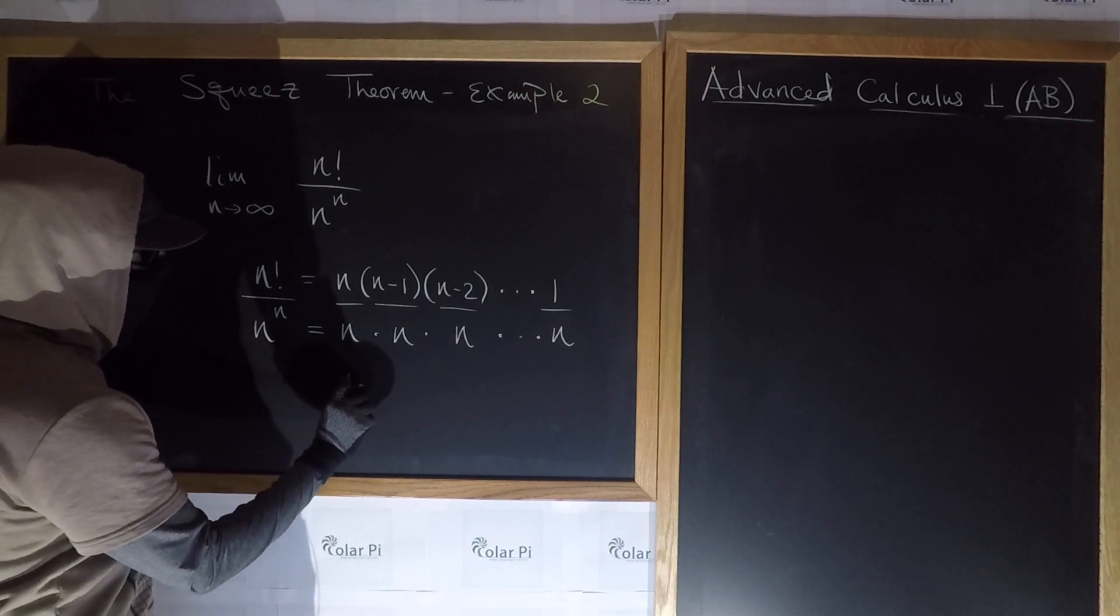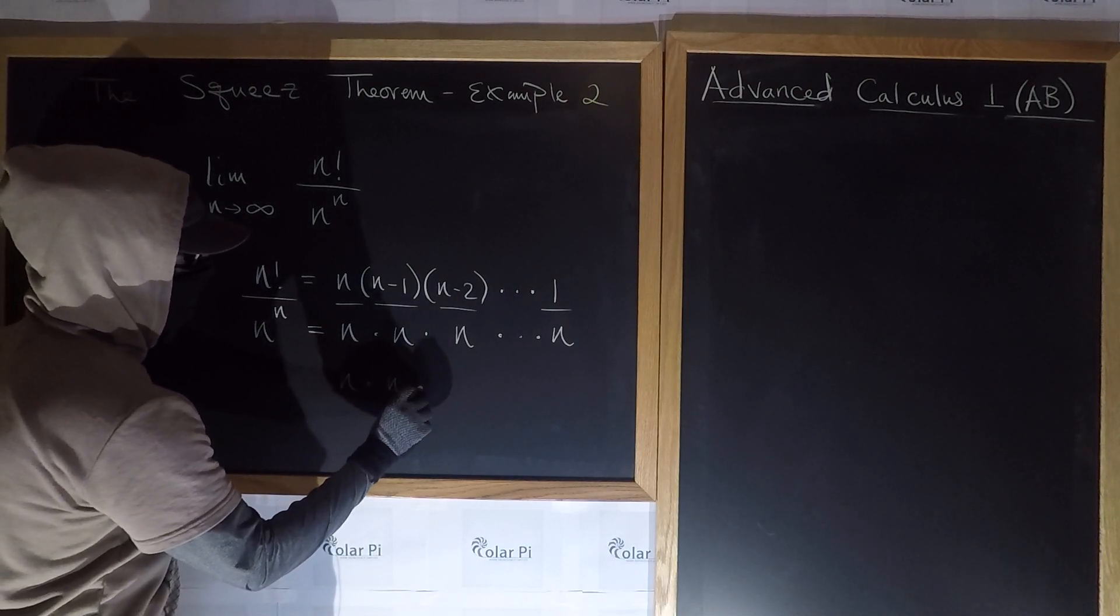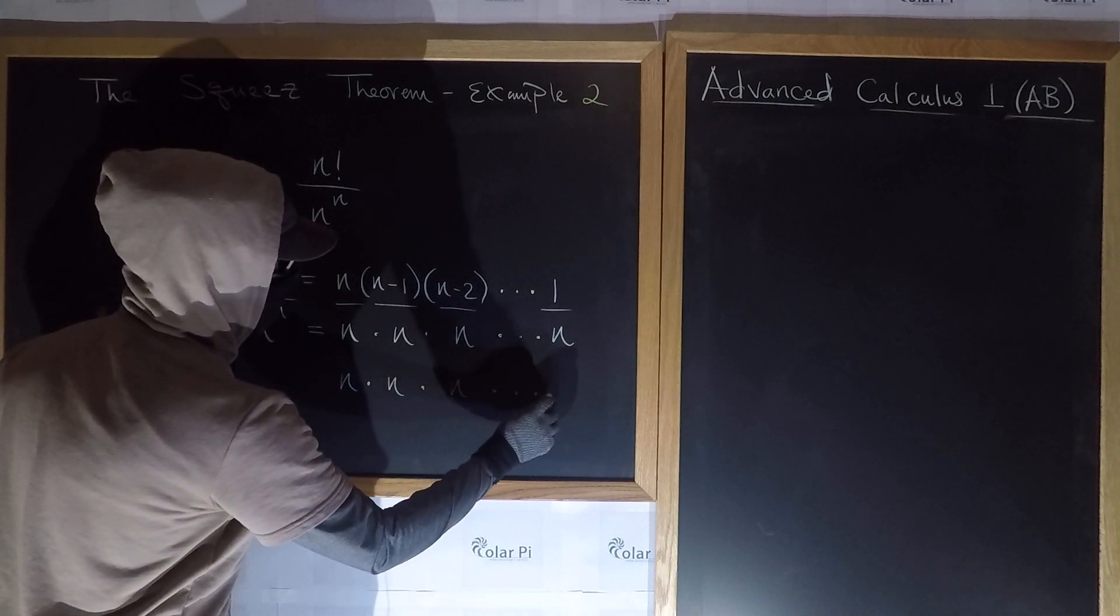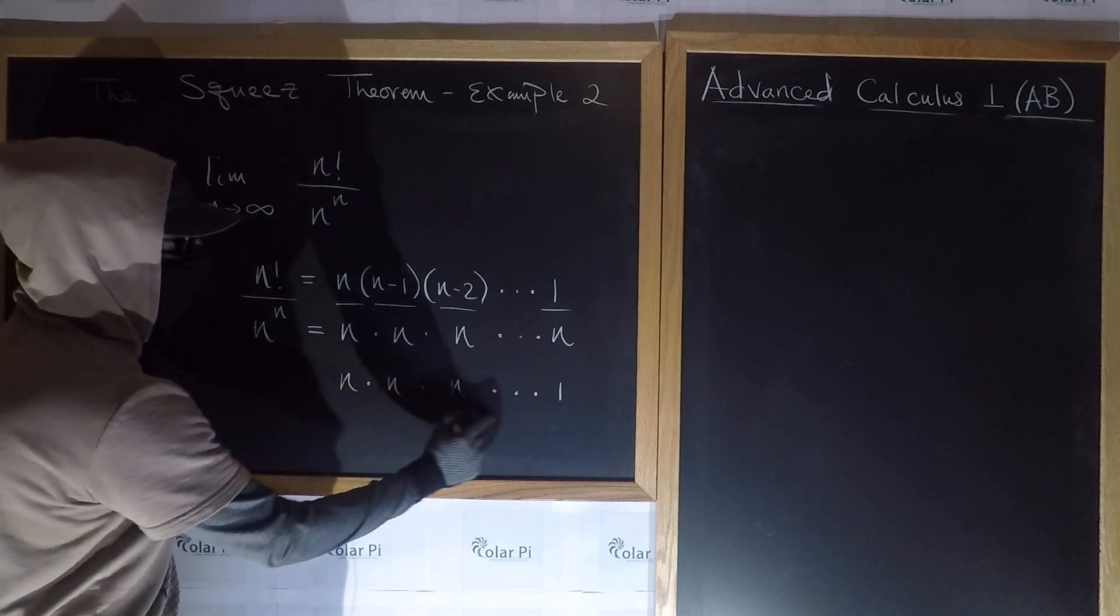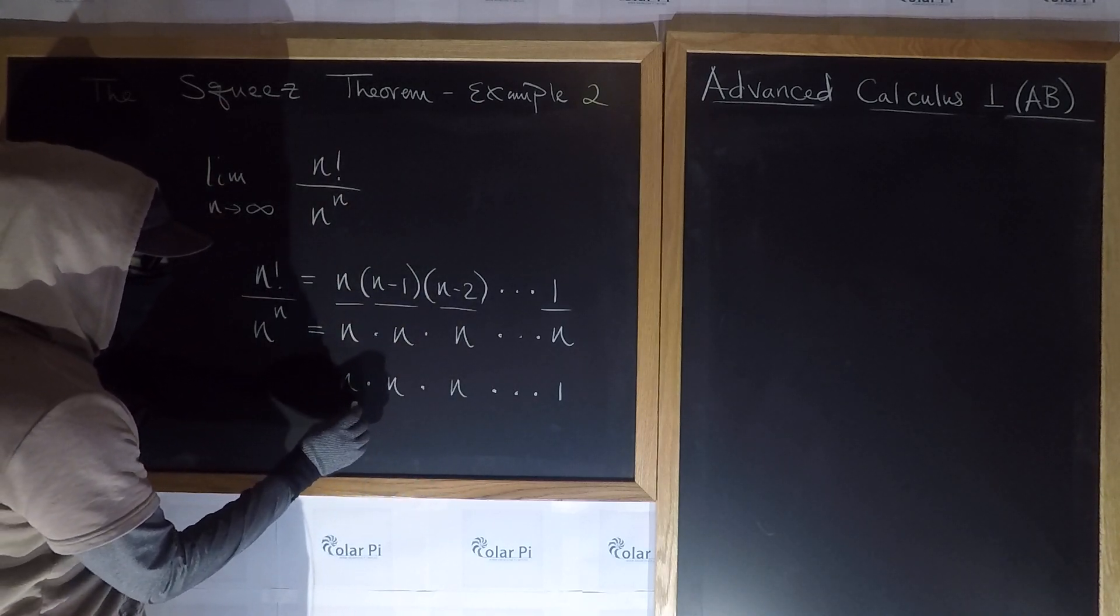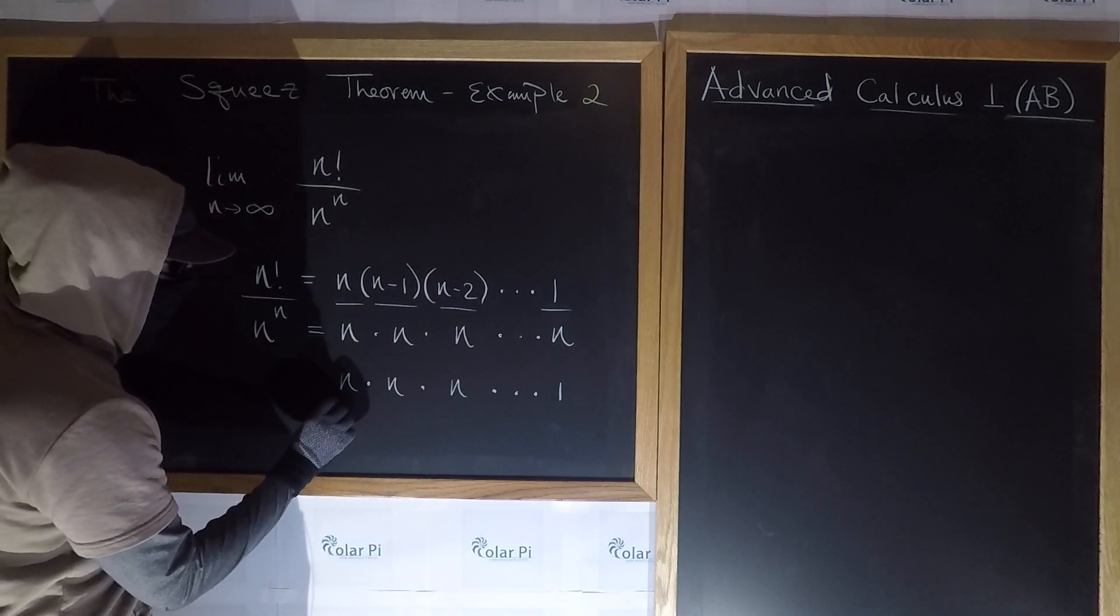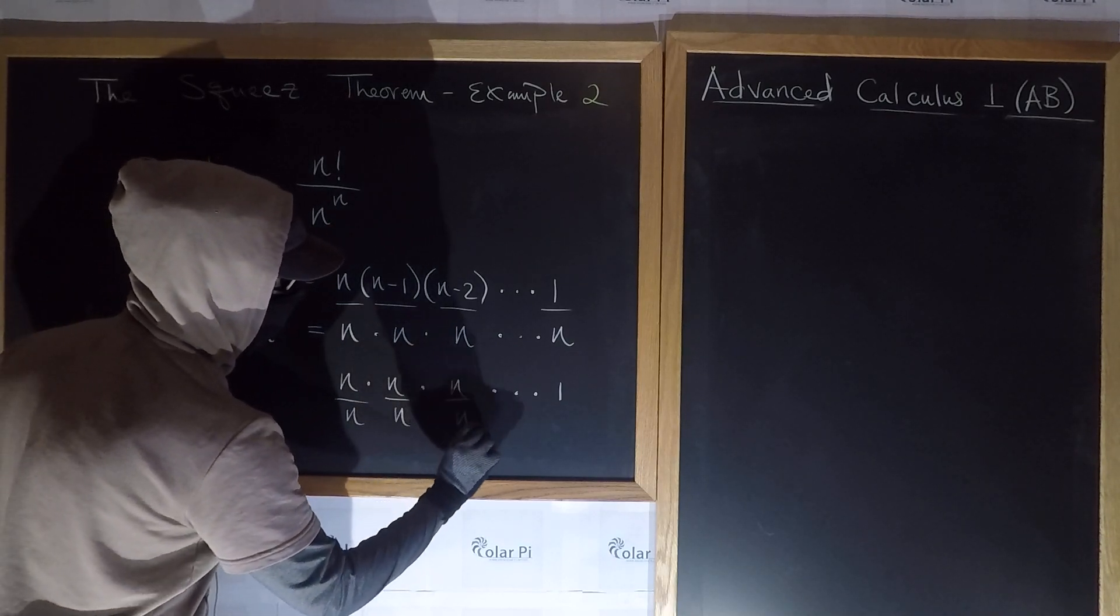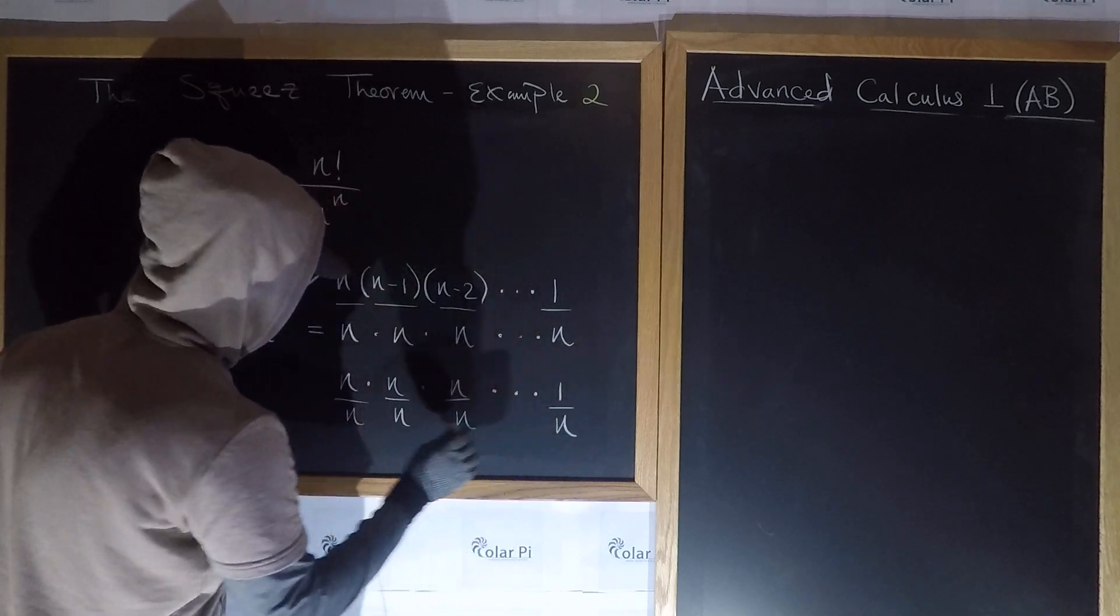What about if we looked at the quotient n times n times n, dot dot dot 1. So use n minus 1 n's. And then this divided by n to the n. So divide each of these by n.